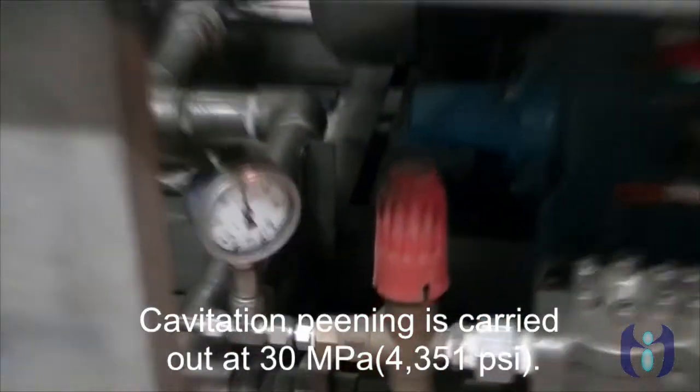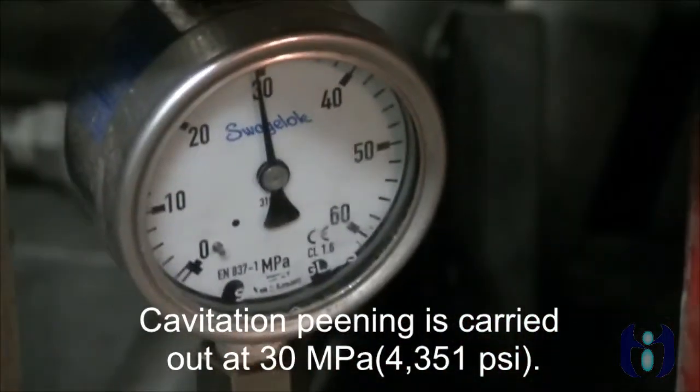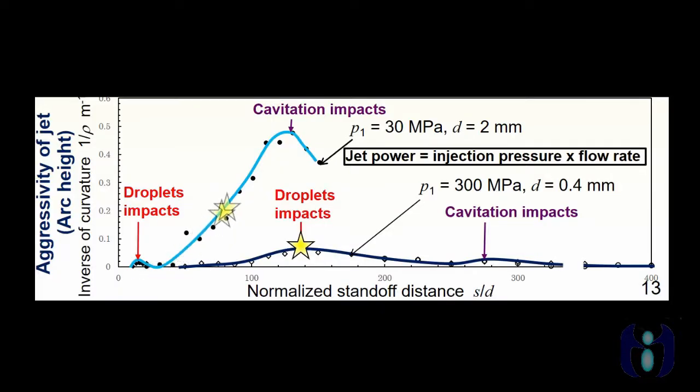Cavitation peening is carried out at 30MPa. Large nozzle is better than that at 300MPa with small nozzle.